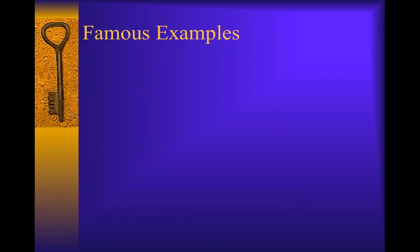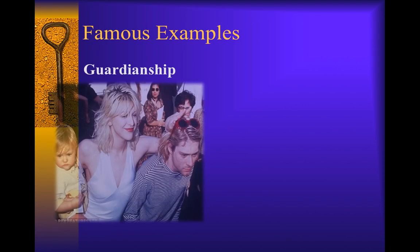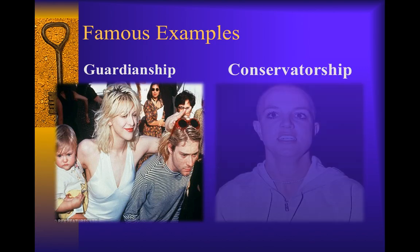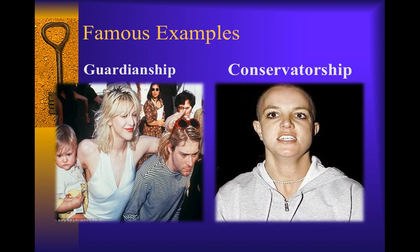Here are some examples to help understand the difference. Kurt Cobain, the lead singer of Nirvana, struggled with drug addiction and committed suicide in 1994. He was married to Courtney Love and had a daughter, Frances Bean, who was two years old. After Kurt's suicide, Courtney Love lost custody of Frances, and Kurt Cobain's mother became her guardian until she was 18 — an example of guardianship. On the other hand, when Britney Spears was hospitalized for a psychiatric hold in 2008, her father became her conservator and maintained control of her companies and finances until she regained competency. Other examples include Lindsay Lohan and Amy Winehouse.